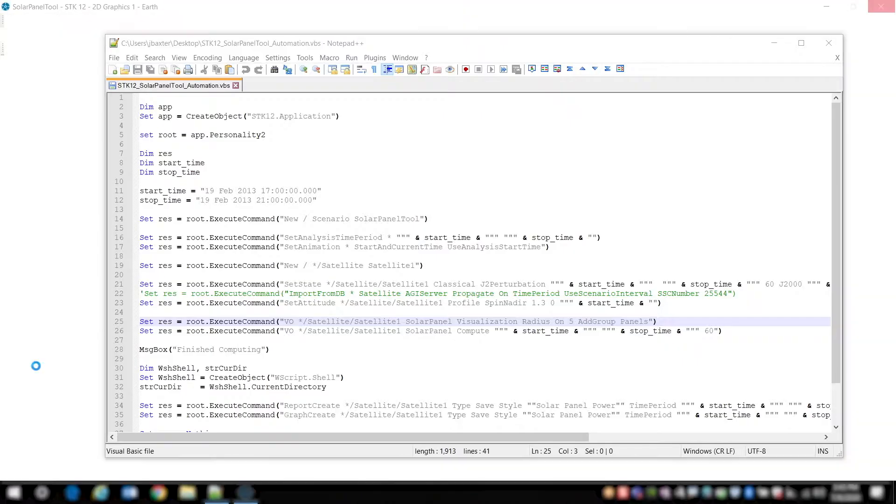So to show you how this works in a little bit more detail, let me go ahead and run this script. And all I have to do is just double-click on the script, and it says this is a VBScript in this example, and then that's going to start executing the code line by line doing all these functions.